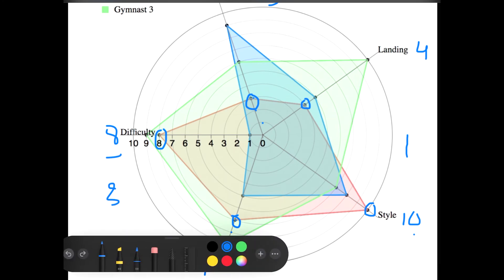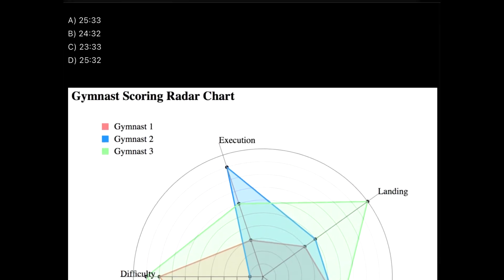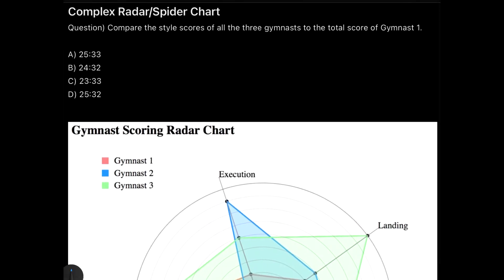So that means the score of gymnast 1 in all five different features would be equal to 32. If I go back and check my options, 32 is present in option D. That means the ratio of the style scores of all three gymnasts to the total score of gymnast 1 will be 25 is to 32.